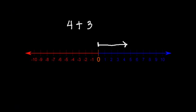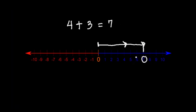Tapos, meron pa dito ang isa pang number — itong number na to ay 3, and that is positive. So, since positive yan, move ulit tayo ng tatlong beses sa right. This time, ang starting point natin is 4. Ang stopping place natin ay si 7 — nasaan ang ating arrowhead. Therefore, 4 plus 3 is equal to 7. Kung i-visualize natin yan using number line, ganito po siya i-visualize.